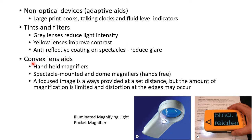An important type of low vision aids is convex lens aids. These include handheld magnifiers, spectacle mounted magnifiers, and dome magnifiers which are hands-free. Using convex lens aids, a focused image is always provided at a set distance, but the amount of magnification is limited and distortion at the edges may occur. This picture shows an illuminated magnifying light and a pocket magnifier, which are examples of convex lens low vision aids.